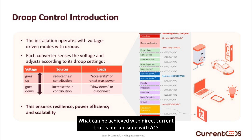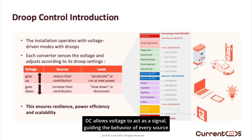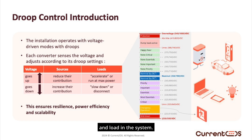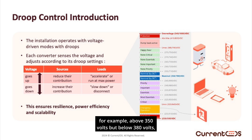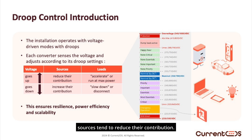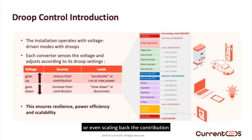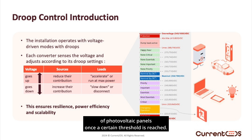DC allows voltage to act as a signal, guiding the behavior of every source and load in the system. When the voltage rises to the upper half of the nominal band — for example, above 350 volts but below 380 volts — sources tend to reduce their contribution. This could mean slower battery discharge, reduced energy import from the public grid, or even scaling back the contribution of photovoltaic panels once a certain threshold is reached.